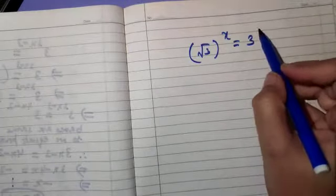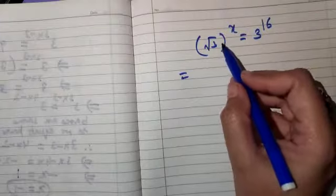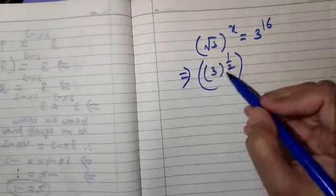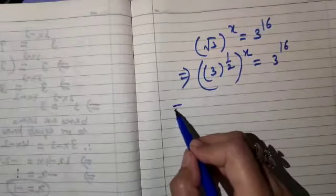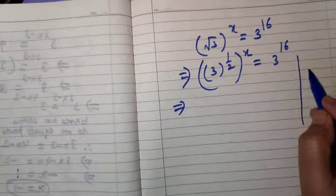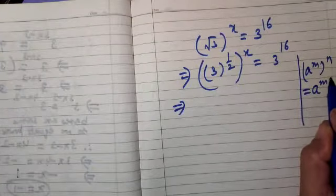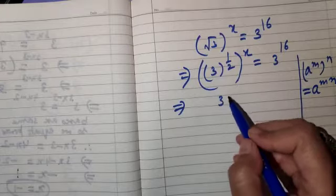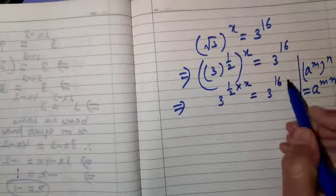One more example: root 3 raised to the power x is equal to 3 raised to the power 16. We write root 3 as 3 raised to the power 1 by 2. So this implies 3 raised to the power 1 by 2, raised to the power x, equals 3 raised to the power 16. Applying the law — a raised to m raised to n equals a raised to m into n — we get 3 raised to the power 1 by 2 into x equals 3 raised to the power 16.